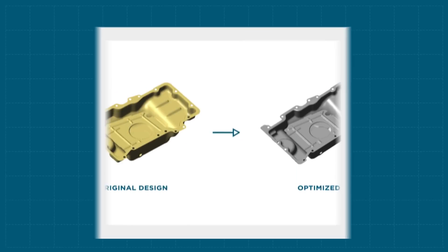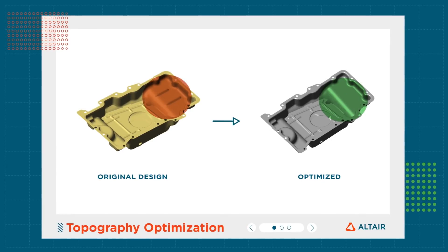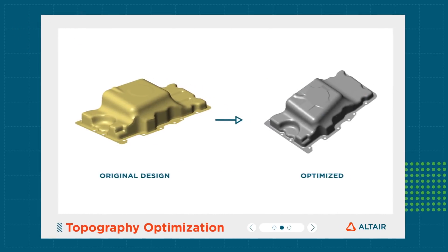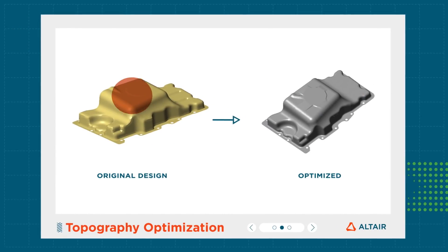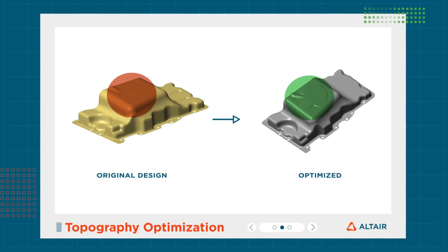To improve the vibration characteristics, local shape modifications such as beads are added for stiffness. Most of the time, the location, shape, and orientation of these beads is based on the natural geometry of the part and the designer's experience.